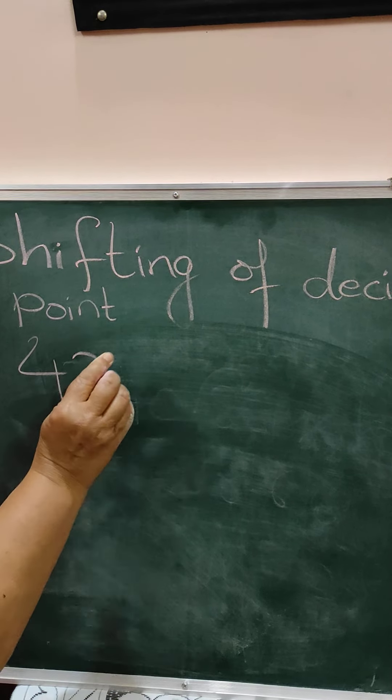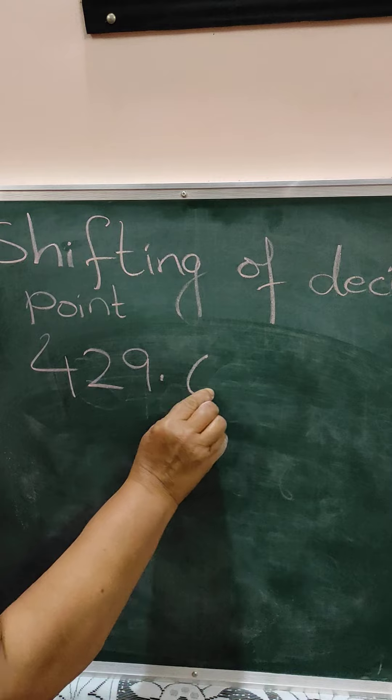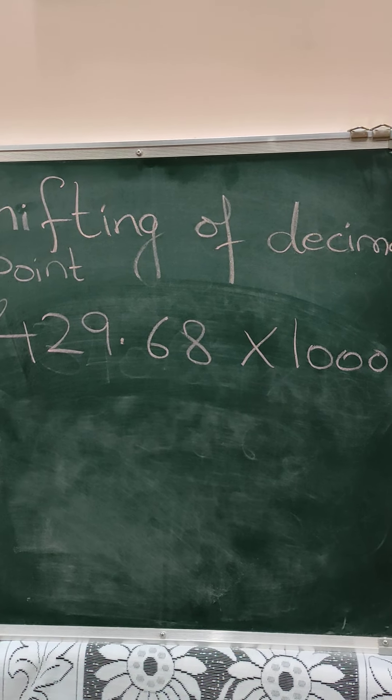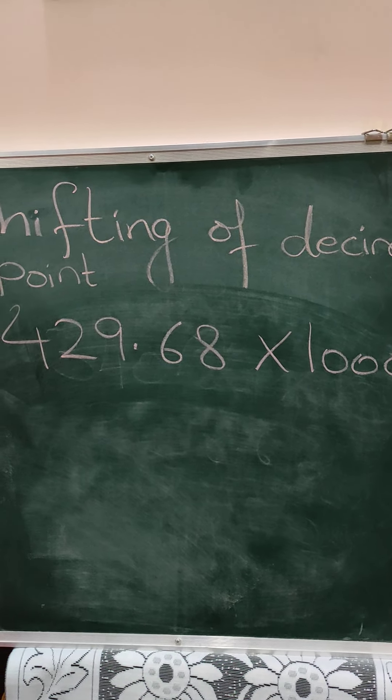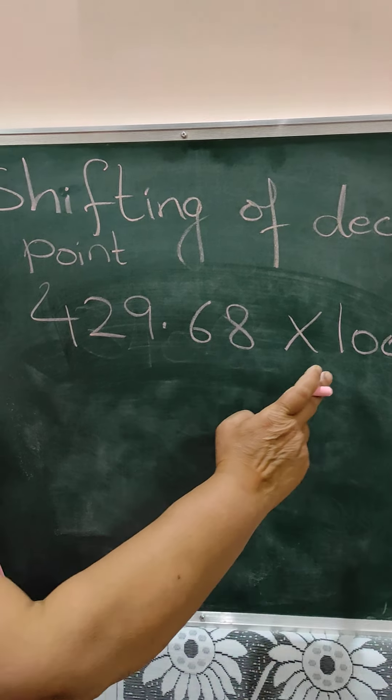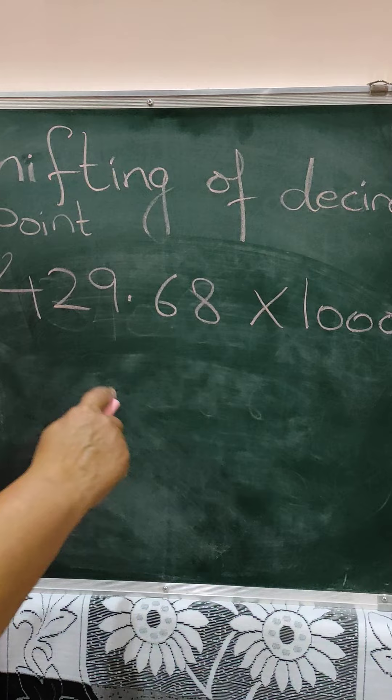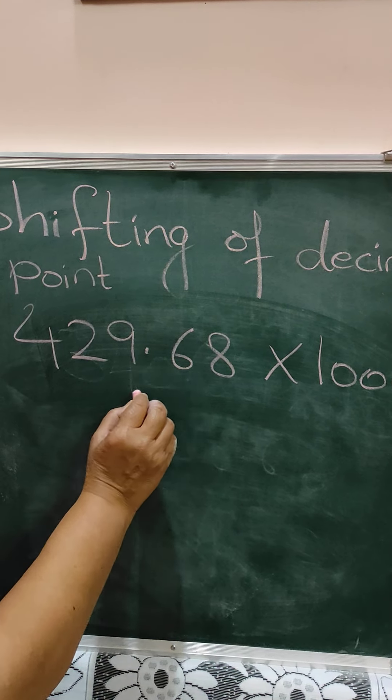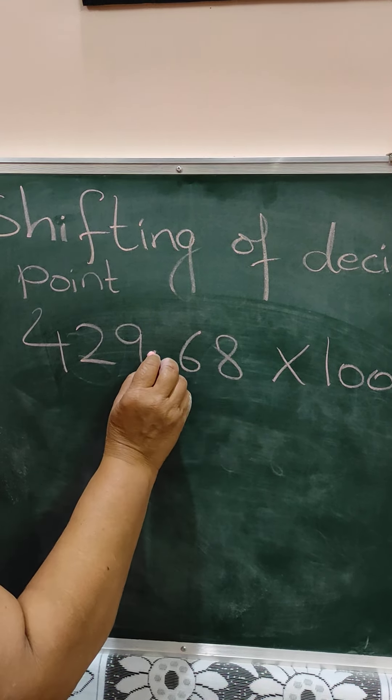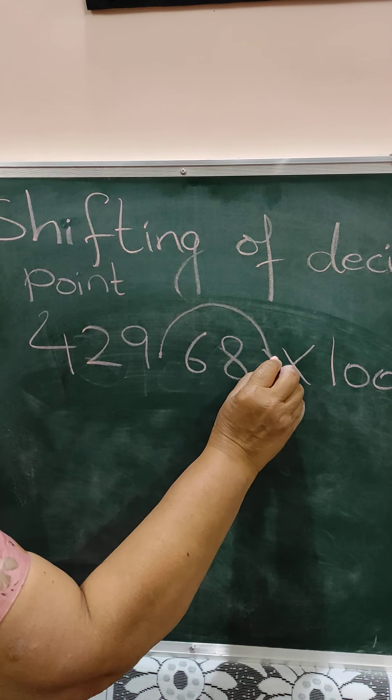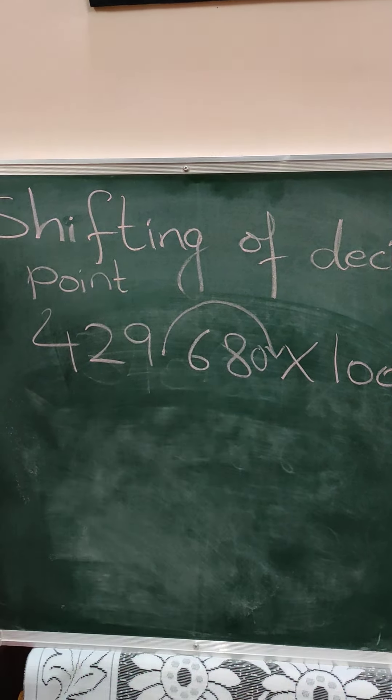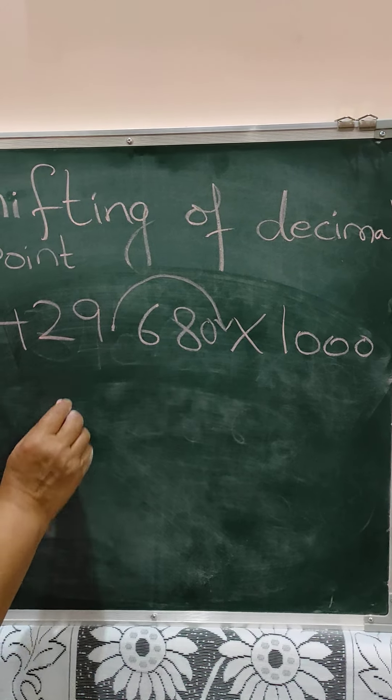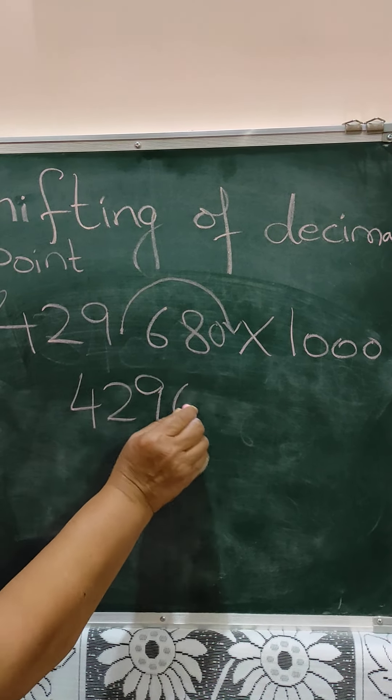Suppose the number is 429.68 multiplied by 1000. Now we will take three zeros. So you have to shift how many digits? Three digits. Shifting of decimal point coincides with the number of zeros. As many zeros, that many digits shifting. So here, shifting of three digits. Now there are only two digits, 0.68. So what we have to do? We have to make three. So for making three, you can put one zero here. Always on the right. Children, please remember. In multiplication, right. So the answer will be 429680.